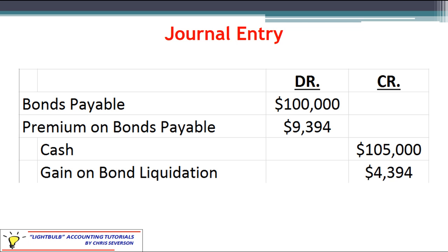That journal entry is really the main point of this module. Three of the four items you should be able to calculate just by understanding what's left: we know what's in bonds payable, we know what's in the premium, and we know what we had to pay in cash. The difference — whether it's a debit for a loss or a credit for a gain — is the $4,394 needed to balance everything out.